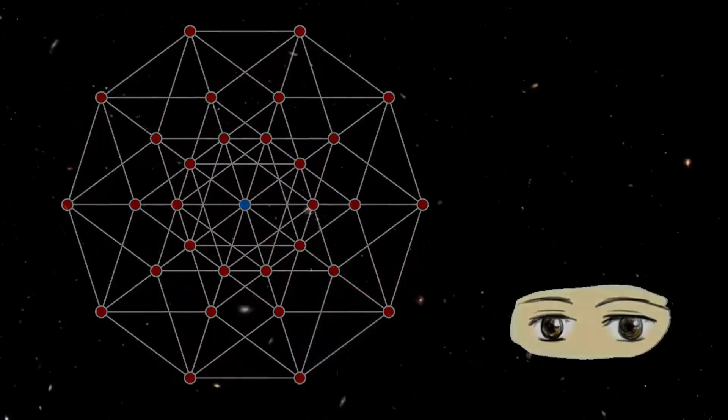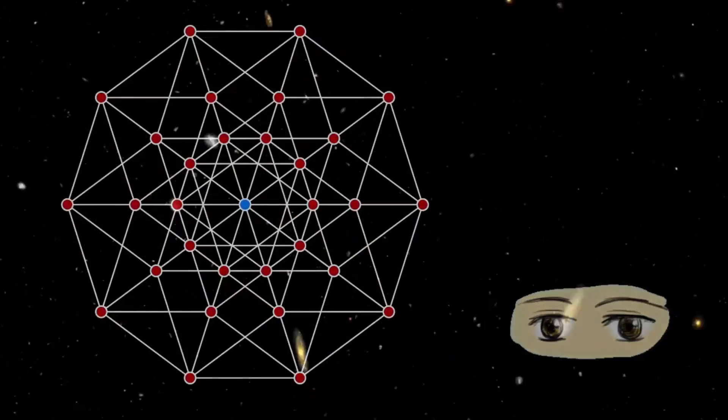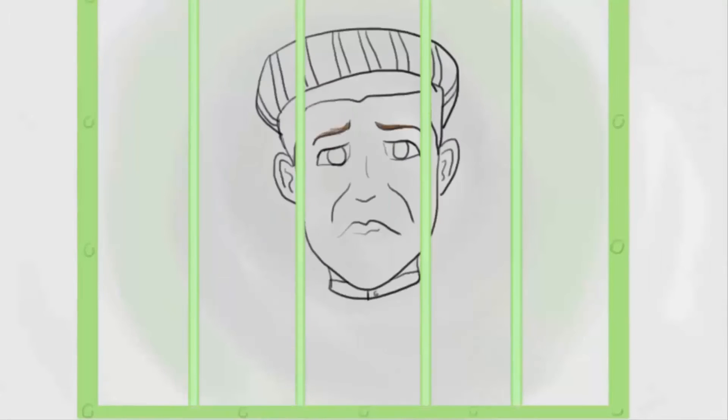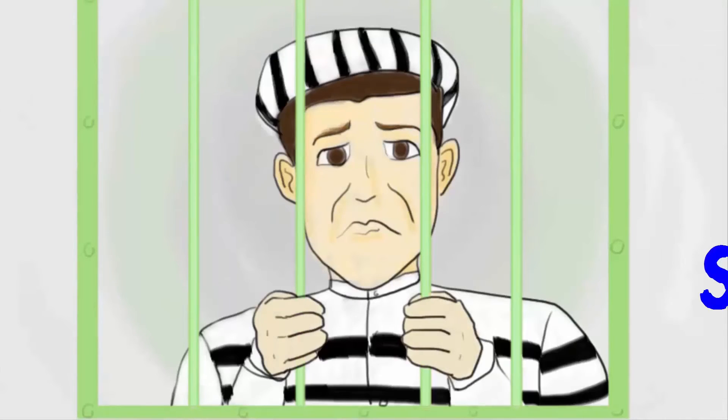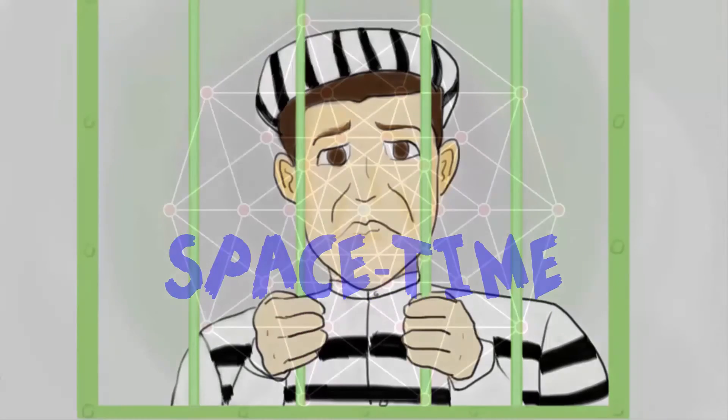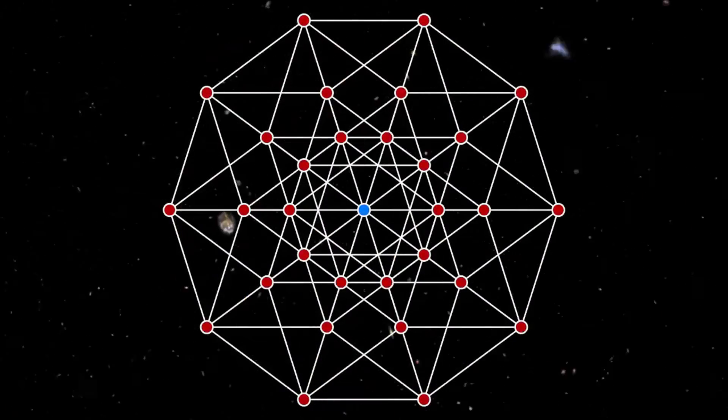We may never be able to see these dimensions, unlike the four dimensions of space-time, because it might be that they are very, very small. Having said that, it might also be that we are somehow confined to space-time, or it might be that the extra dimensions are not there.